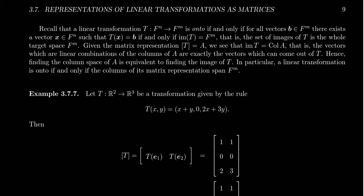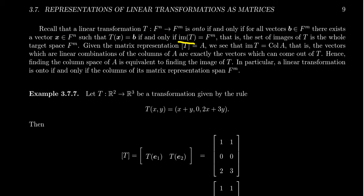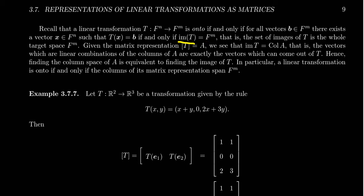What does it mean for a transformation to be onto? Suppose we have a linear transformation T which goes from Fⁿ to Fᵐ. We say that it's onto if, for any vector we pick in the target space — the so-called co-domain — call it B, then we can find at least one vector in the domain that maps to it. That's the same thing as saying the image of T is equal to Fᵐ, so everything in the target space is something we can actually hit.